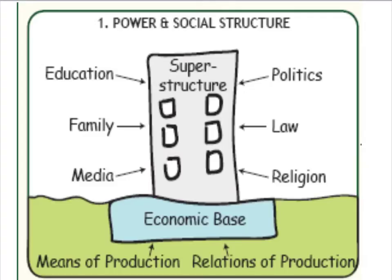Relations of production refers to the way in which people organise themselves to produce the things needed within their particular economy. As people produce things, they enter into certain relationships — so in our society, for example, we have bosses and workers. Marx called these the relations of production. The other part of society, represented in this image by the actual building, Marx called the superstructure.